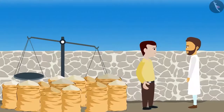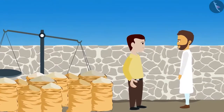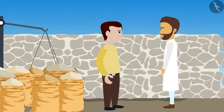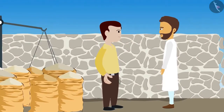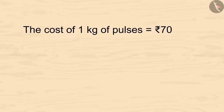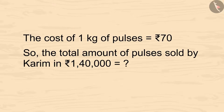Look, Karim is going to the market to sell his pulses. The shopkeeper gives him 1 lakh 40 thousand rupees. Karim is very happy. Kids, if the selling price of 1 kg of pulses is 70 rupees, then how many kgs of pulses did Karim sell? You can pause the video and calculate it.